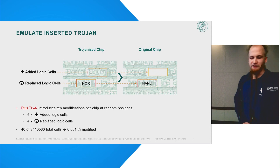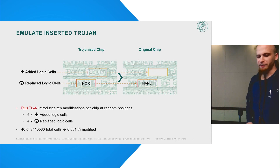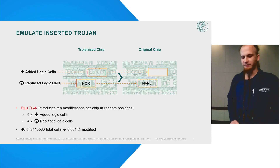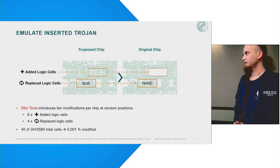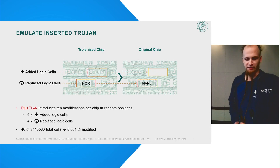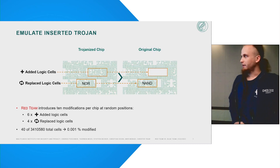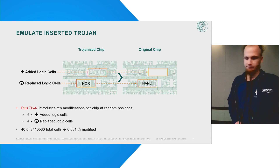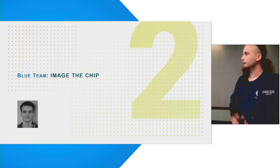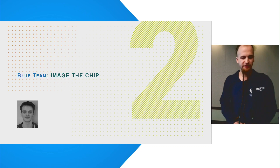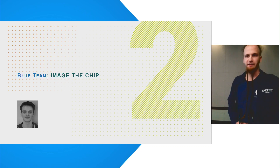In total, the red team introduced four additions and six replacements scattered all over the chip and placed randomly. So now that the preparation is done, the blue team can take over.